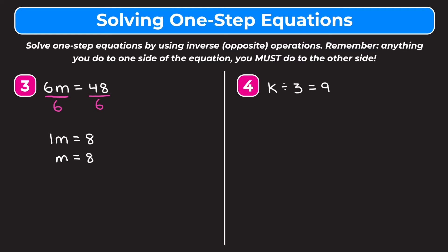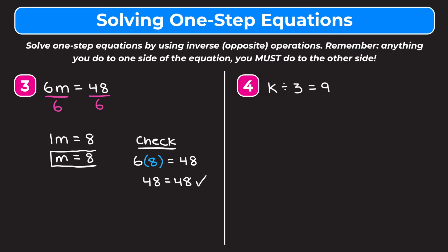Since 1m is just the same as m, we get that m equals 8. To check our answer, we replace m with 8 in our original equation: 6 times 8 equals 48. 6 times 8 is 48, so we get 48 equals 48, and both sides are equal, confirming that m equals 8 is correct.